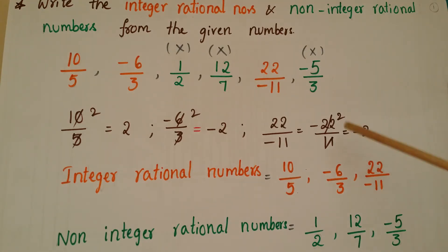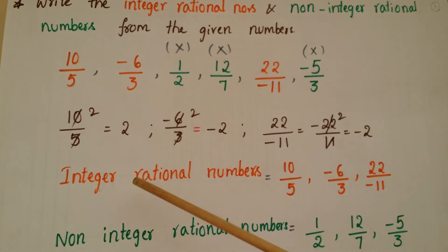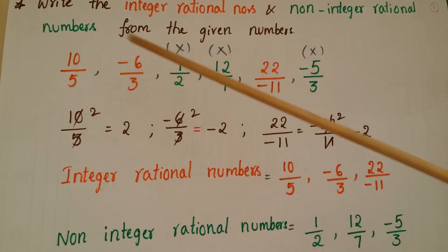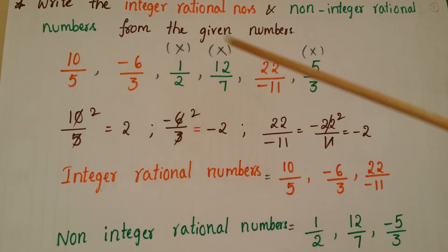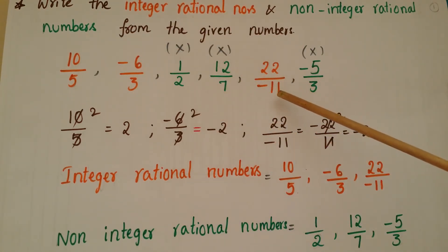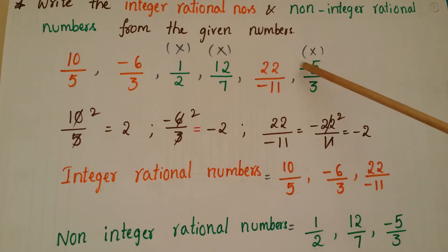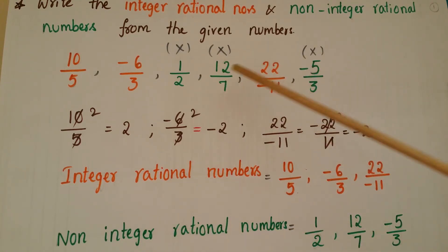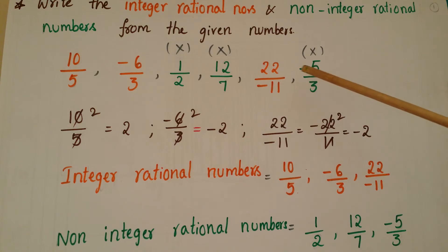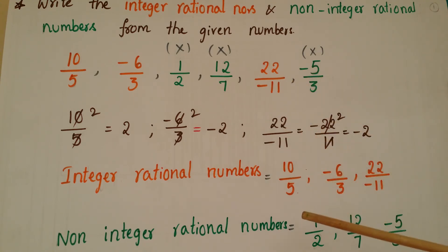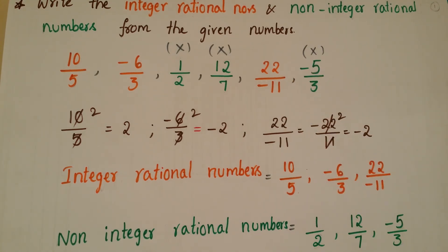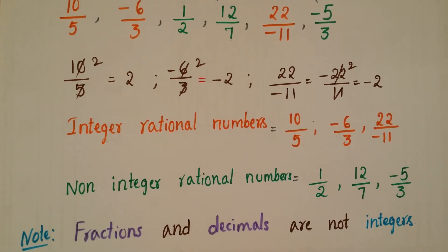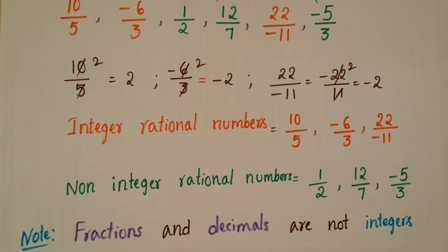So now we can write the integer rational numbers: 10 by 5, minus 6 by 3, and 22 by minus 11. The remaining numbers are non-integer rational numbers: 1 by 2, 12 by 7, and minus 5 by 3. Note that fractions and decimals are not integers.